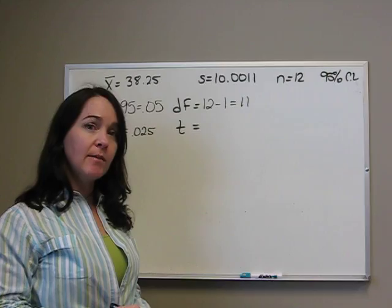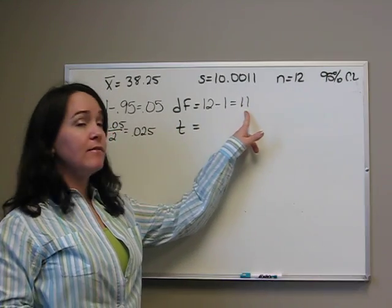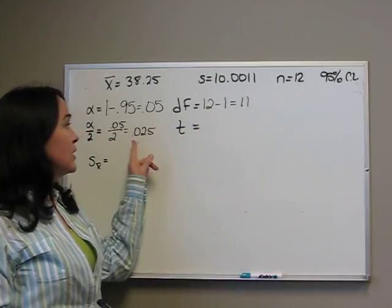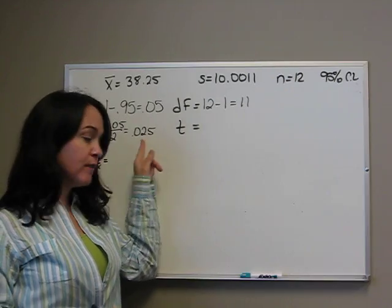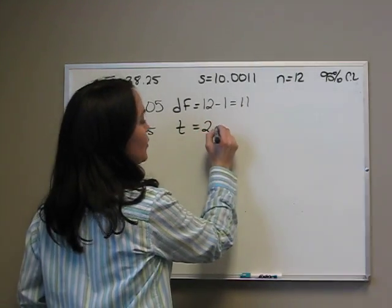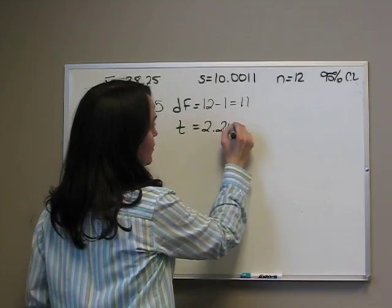Now we go to our t-table with degrees of freedom of 11. We go across to 0.025, and our t-score is 2.201.